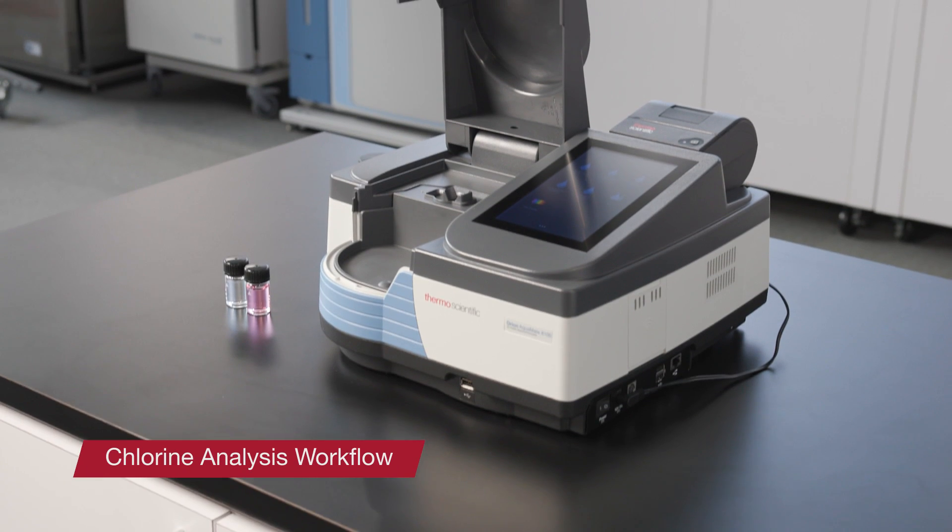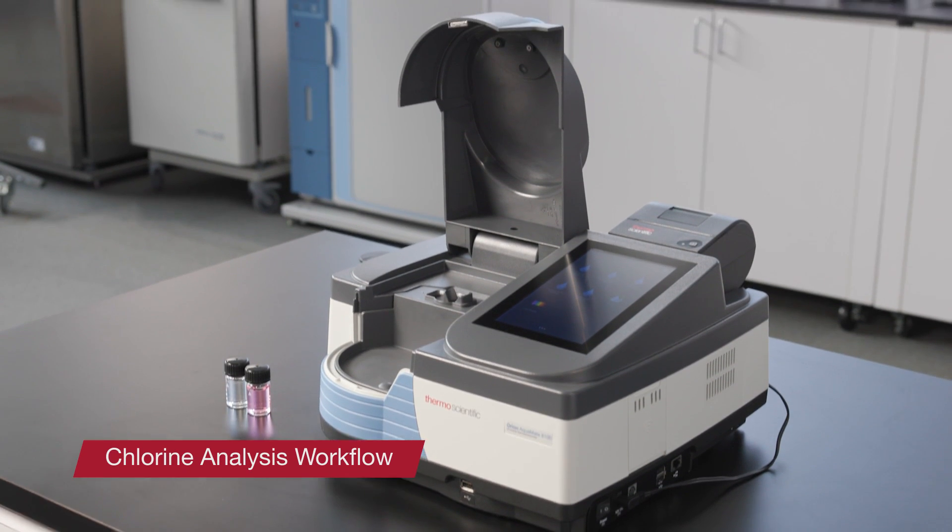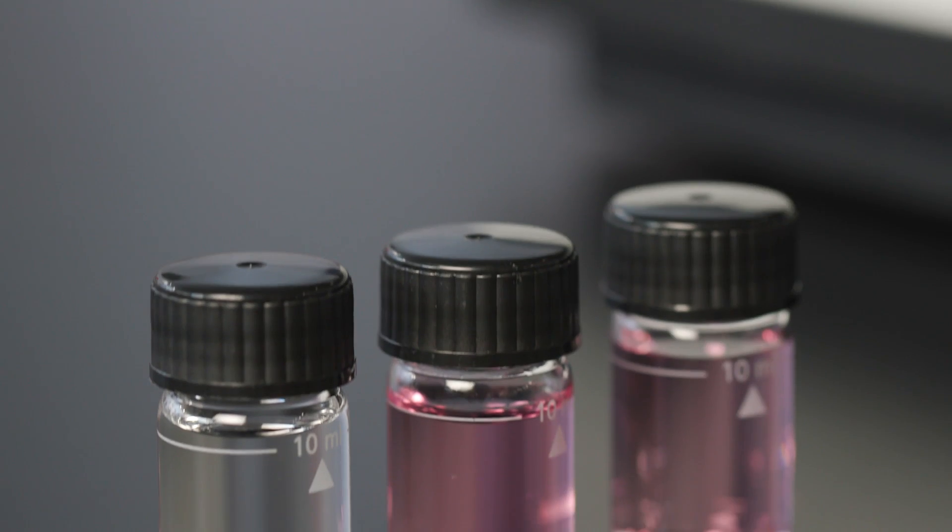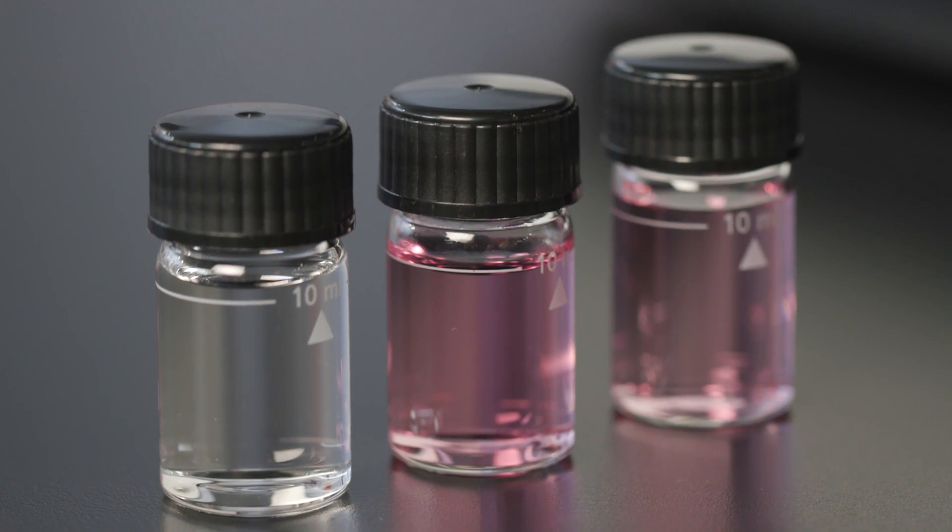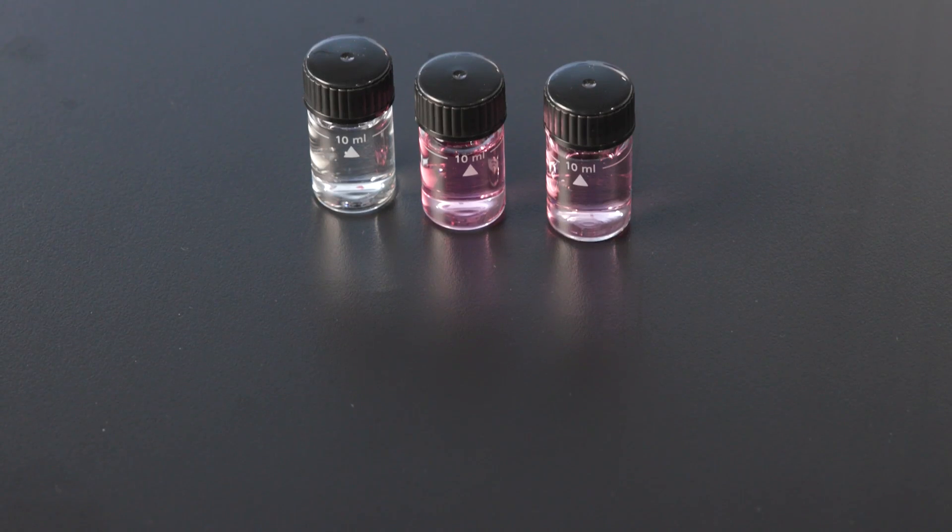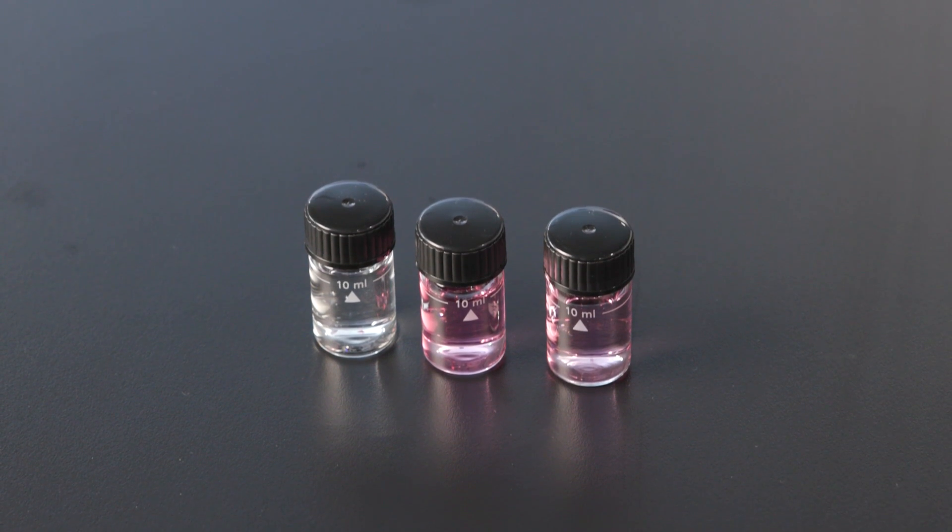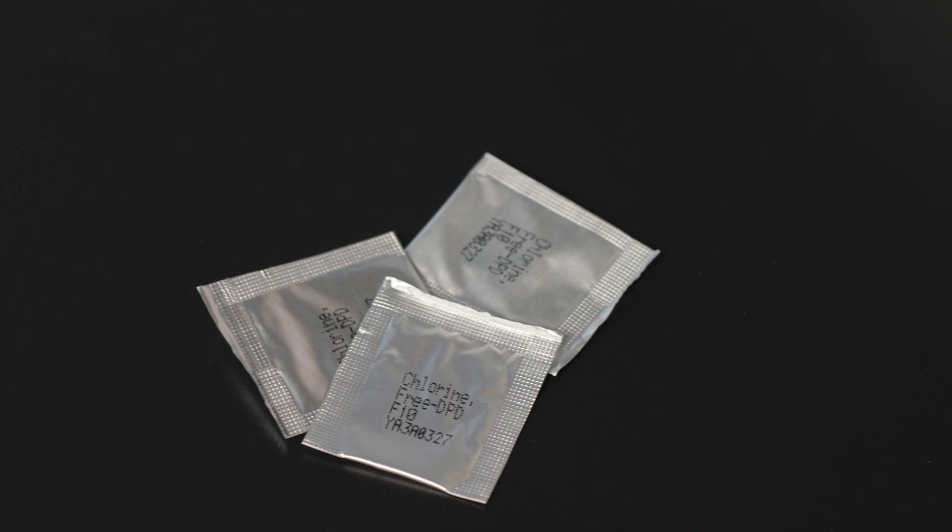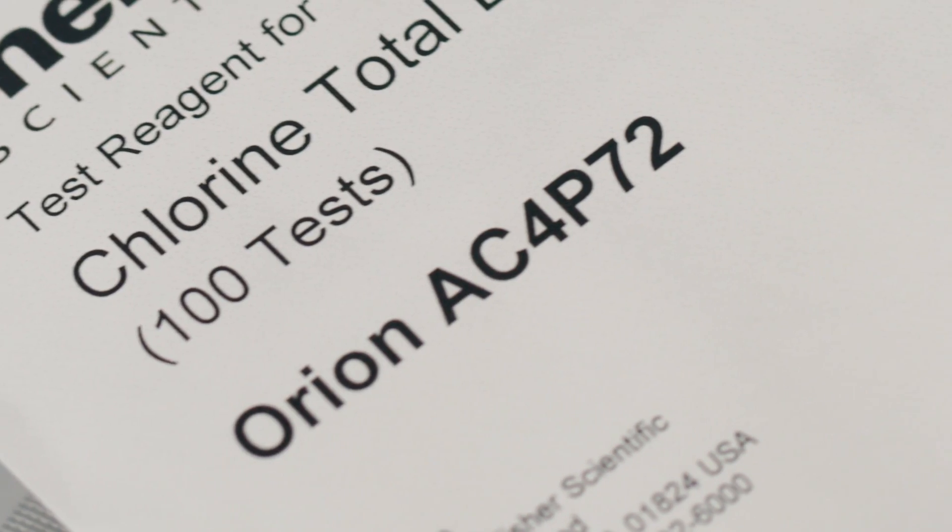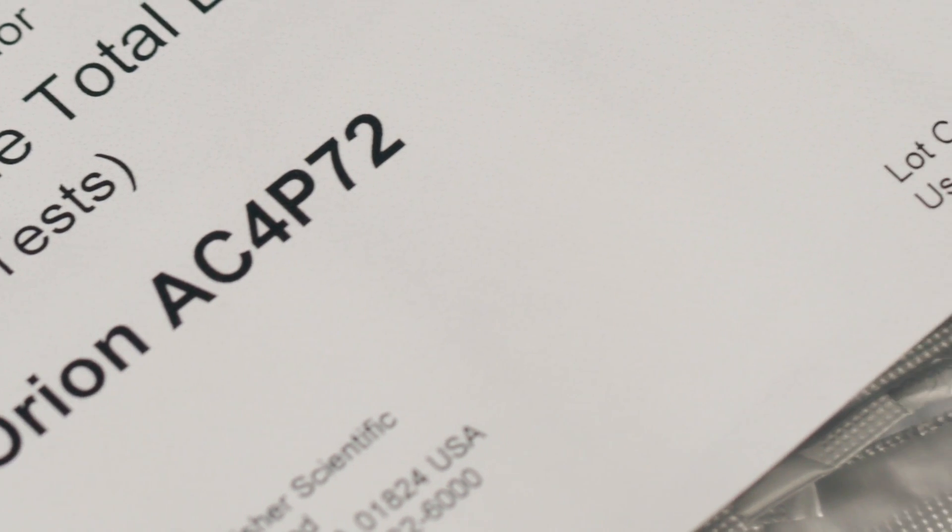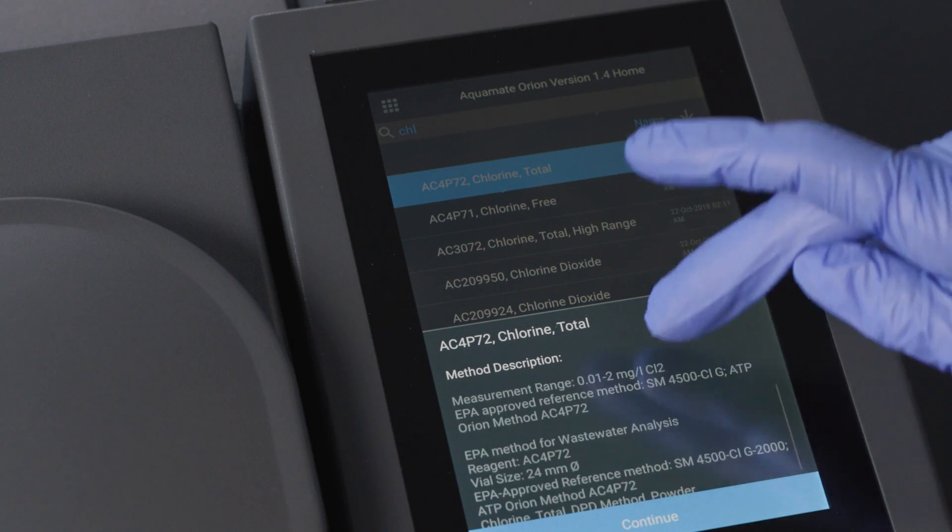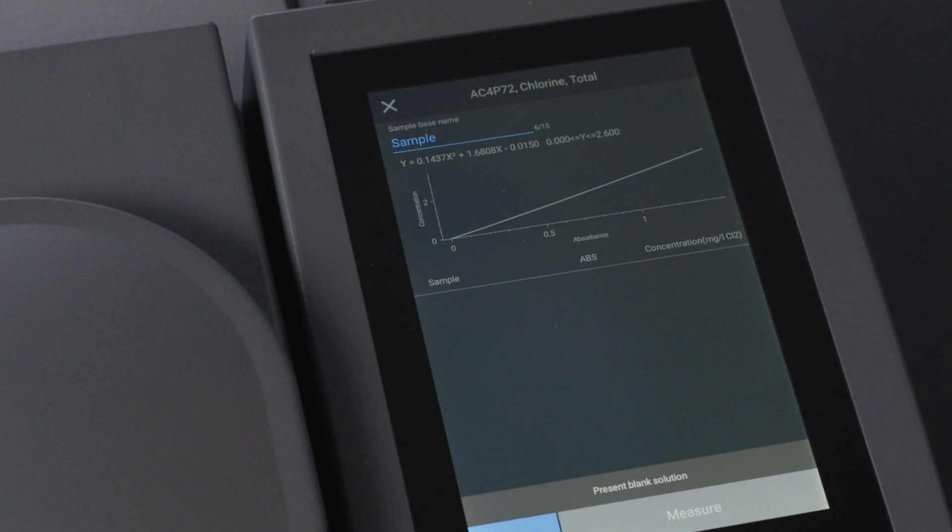Next, I'd like to run a quick total chlorine analysis as a workflow demonstration. A couple of minutes ago, I prepared these samples to analyze using the Aquamate spectrophotometer. These were prepared using Thermo Scientific Orion Aquafast total chlorine reagent powder packs. The part number is shown here on the package and correlates to the method on the Aquamate AC4P72. The reagent can be conveniently ordered using this same catalog number.